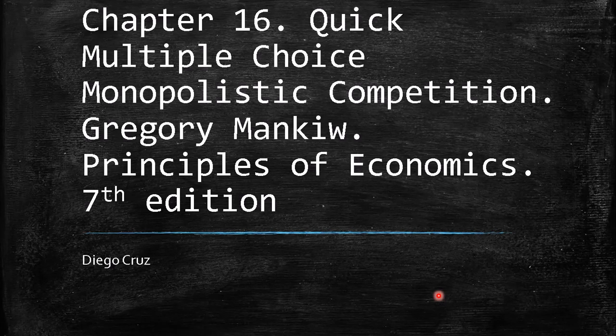Hi everyone, welcome to this new video. This is about Chapter 16, Monopolistic Competition. We're going to talk about quick multiple choice. This is from the book by Gregory Mankiw, Principles of Economics, 7th edition.